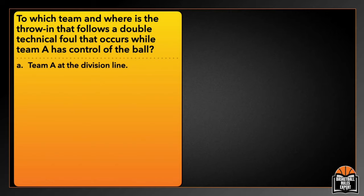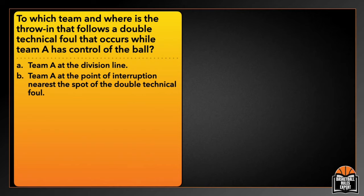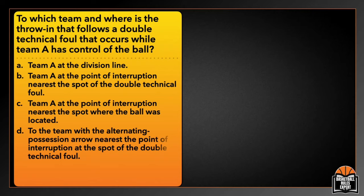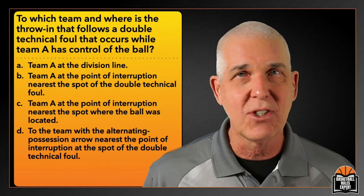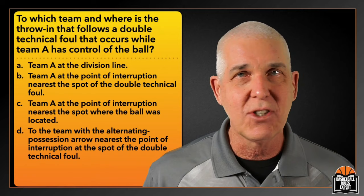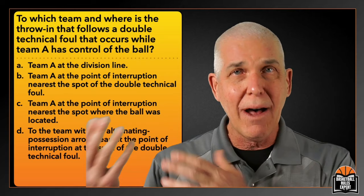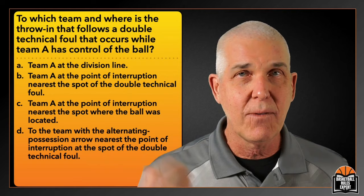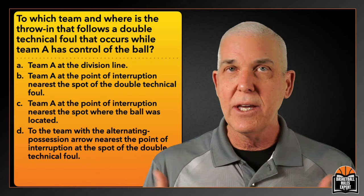Seven questions down, three to go. Next question: To which team and where is the throw-in that follows a double-tactical foul that occurs while Team A has control of the ball? A — Team A at the division line. B — Team A at the point of interruption nearest the spot of the double-tactical foul. C — Team A at the point of interruption nearest the spot where the ball was located. Or D — to the team with the alternating possession arrow nearest the point of interruption. Let's say two players start jawing at each other under the basket while the ball is in play, and double-T's are assessed while the trail official has the ball being closely guarded near the division line.